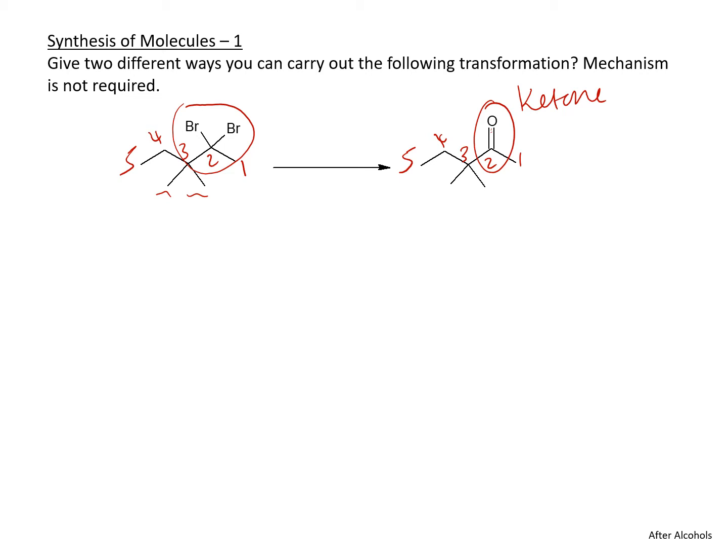Considering that we are not adding any carbons or losing any carbons, we know how to make ketones from alkynes, and we also know how to make ketones from alcohols. That's going to be our thinking. Let's start first from the alkynes.